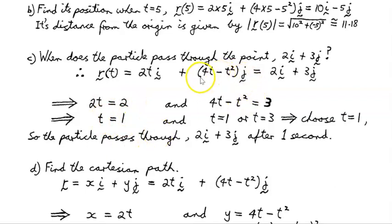And over here in the j direction, we match up the components. 4t - t² = 3. Write that down here. And solving that gives us t = 1 or t = 3. Now, the particle can't split and be at two different places at a single point in time. So we choose t = 1 because both components agree on that. So, the particle passes through that point 2i + 3j at t = 1 second. After one second.